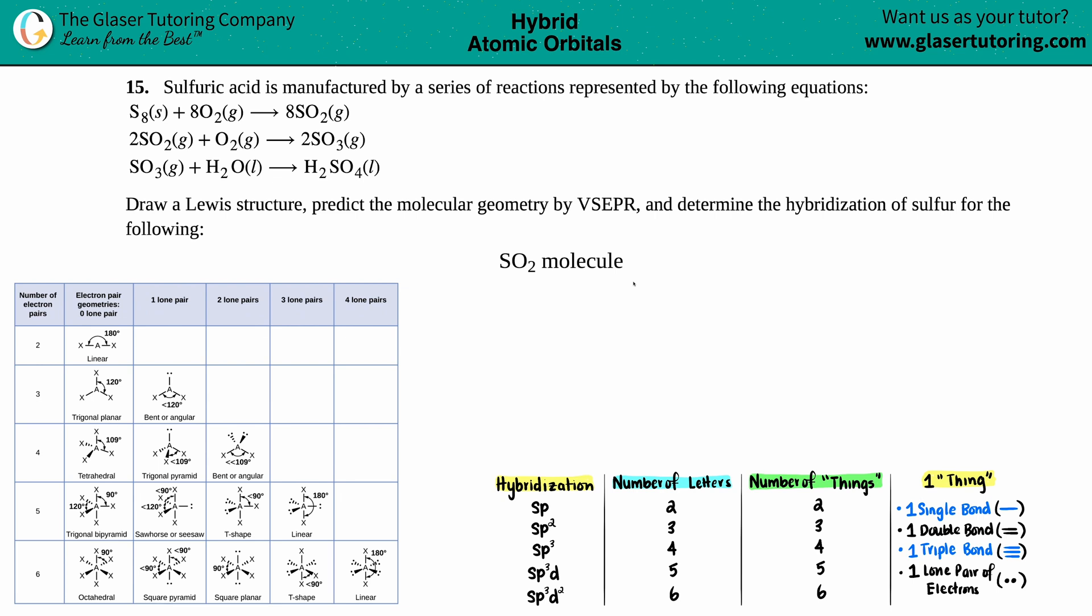Number 15. Sulfuric acid is manufactured by a series of reactions represented by the following equations. And then we have these three equations over here. But the question is, they wanted us to draw a Lewis structure, predict the molecular geometry by VSEPR, and determine the hybridization of sulfur for the following. And in this case, we're going to do all of that for the SO2 molecule.